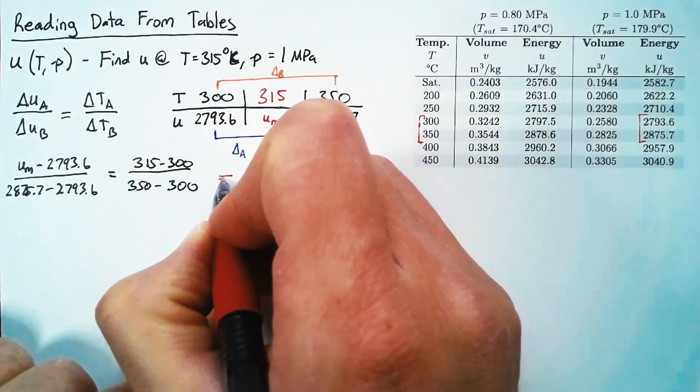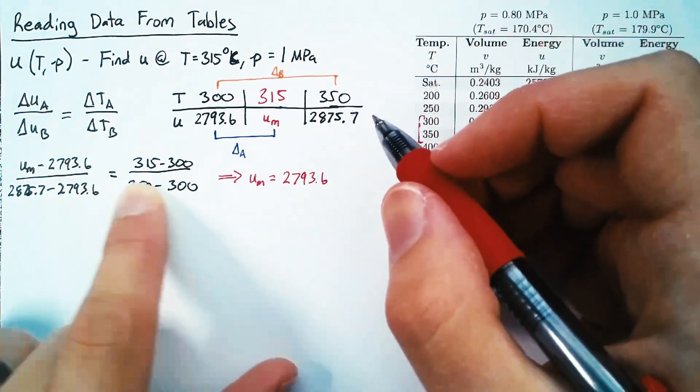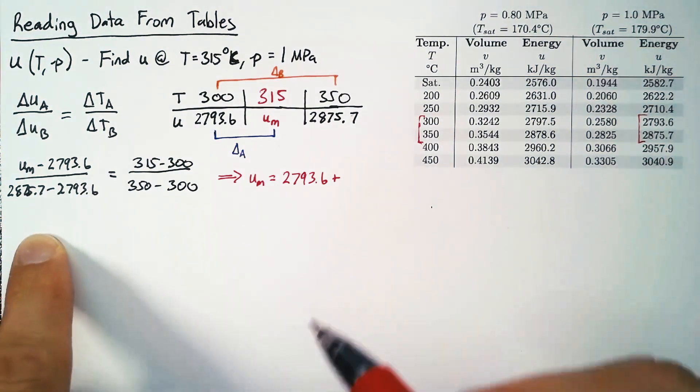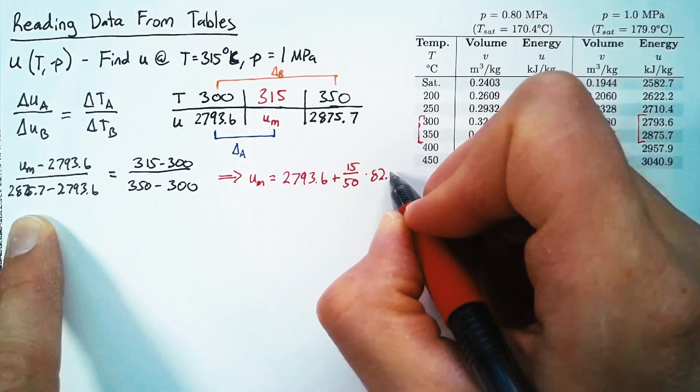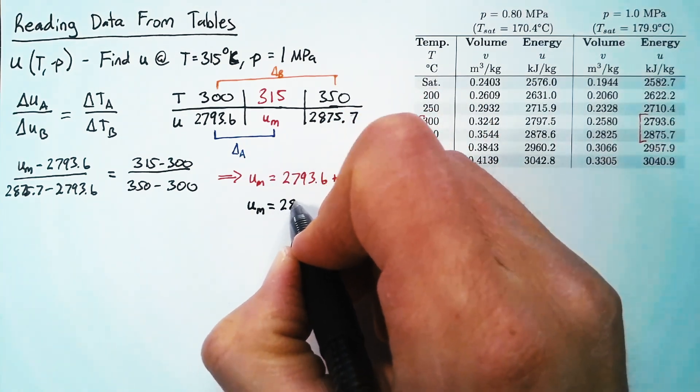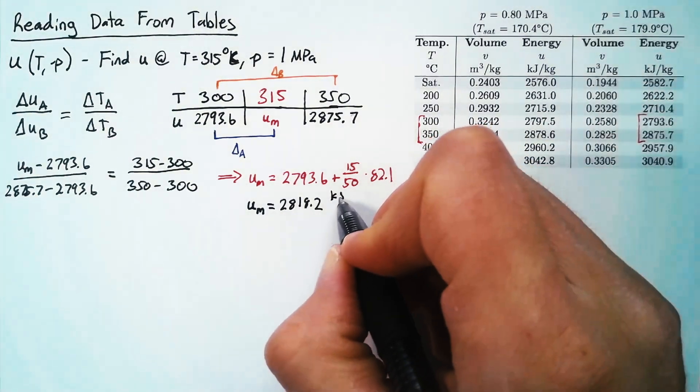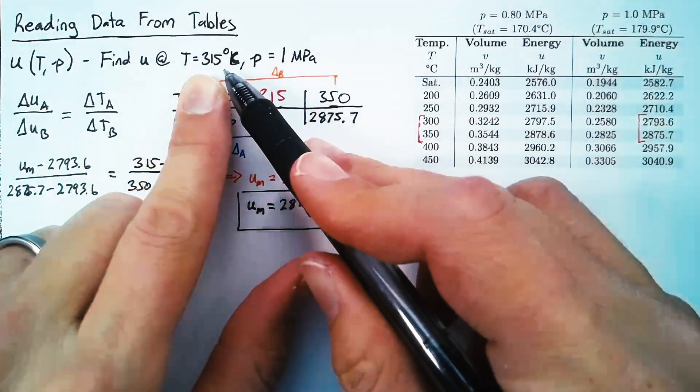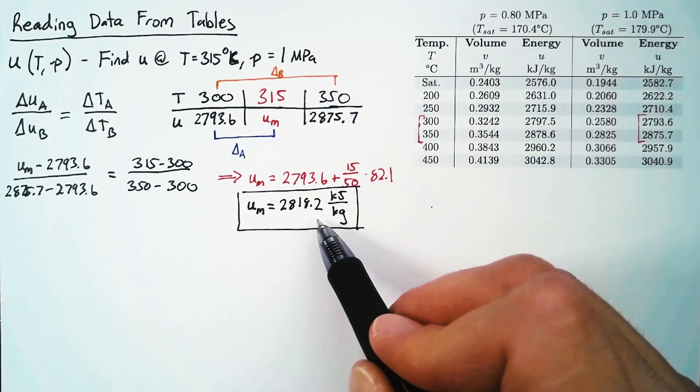We get (um - 2793.6)/(2875.7 - 2793.6) = (315 - 300)/(350 - 300). Solving gives um = 2793.6 + (15/50) × 82.1 = 2818.2 kJ/kg. This is our final answer: at a temperature of 315 degrees Celsius and 1 megapascal, the internal energy is 2818.2 kilojoules per kilogram.